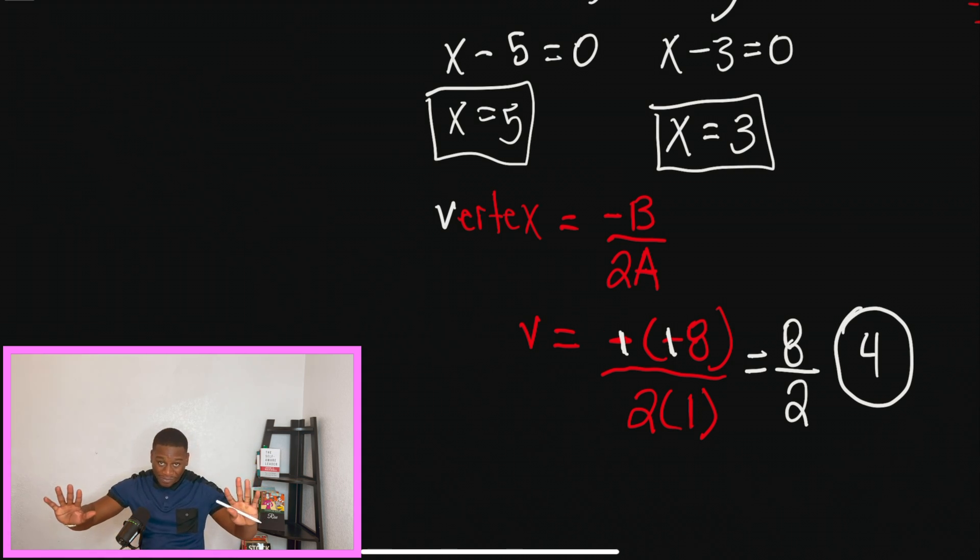Now, hold up. This right here is very important. Students stop right here and they just go straight to 4 on the y-axis and plot it. But guys, understand, what we just found was only the x value for the vertex. We have to go back and find the y value.